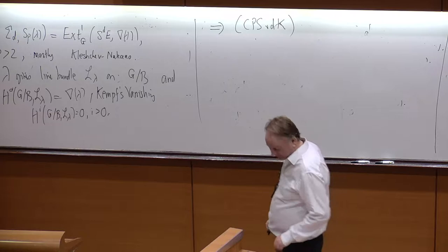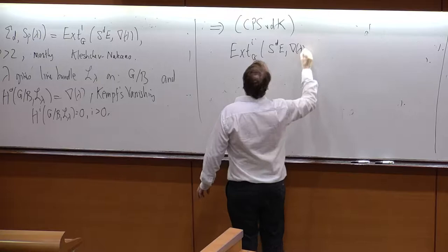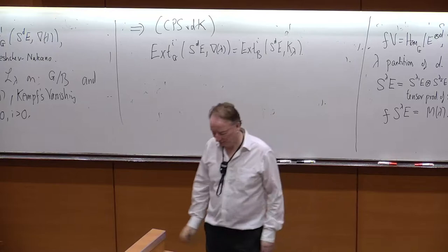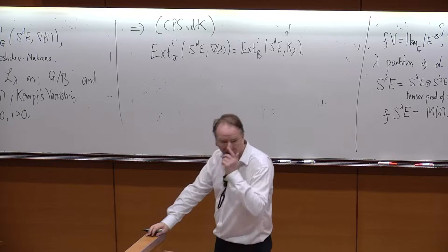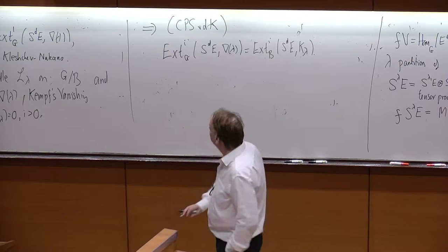And this has an application which is a consequence noticed by Cline, Parshall Scott, and van der Kallen, back in the mid-70s, that this extension group that we're interested in is the B extensions of the symmetric power by K_λ. So, this looks quite fancy, but in fact, since it's type A, it's easy to do this without any algebraic geometry.